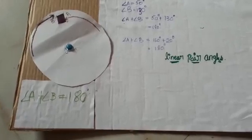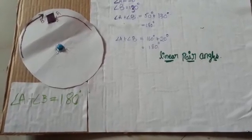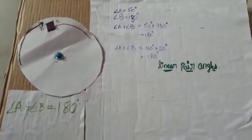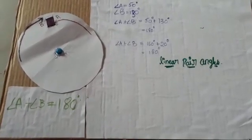What is Linear Pair of Angles? Two angles form a linear pair if they have a common arm, a common vertex, their interiors do not overlap, and the sum of two angles is 180 degrees.